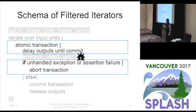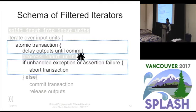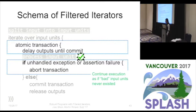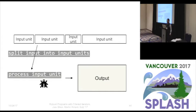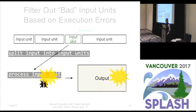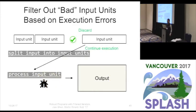If there's an error during the processing code — for example, an unhandled exception or a failed assertion — then the transaction aborts, which rolls back the partial updates to the program state and program outputs caused by the current bad input unit. As a result, the program continues execution as if all those bad input units don't exist. We call this a filtered iterator because as it iterates over input units, it uses execution errors as the criterion to filter out bad input units.